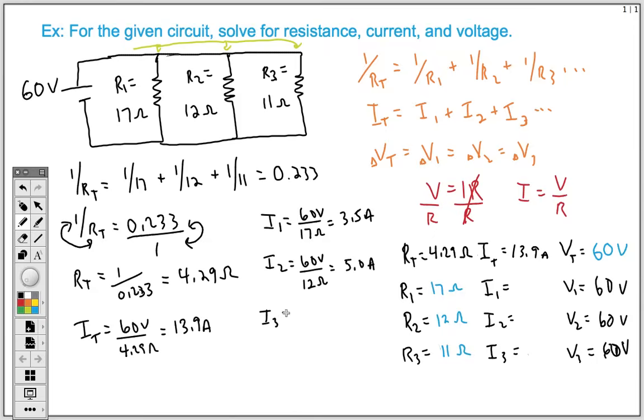And then lastly, I3, it's going to be 60 volts divided by 11 ohms, we end up with 5.4 amps. So we can plug those values in: 3.5, 5.0, and then 5.4 amps.